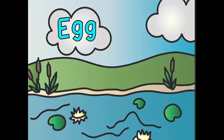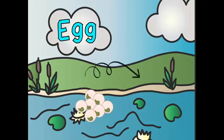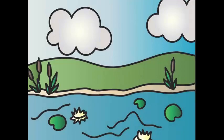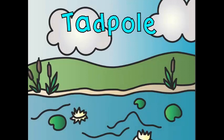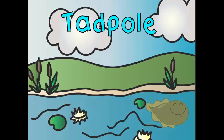The life cycle of a frog begins when an adult lays an egg. The eggs are laid in a pond and grow from one to three weeks. Afterwards, the eggs hatch and the tadpole emerges. It lives in the water and uses gills to breathe. It does not have any legs.